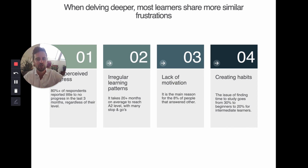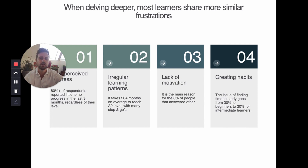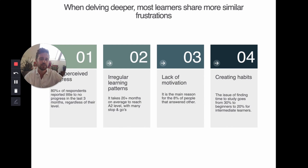Point three: lack of motivation, connected to the two previous points. Of the 8% of respondents who answered 'other' when asked about their biggest obstacle, lack of motivation was the single most mentioned issue. And finally, creating habits — we all know it's important, not only for language learning. Not surprisingly, creating habits was more of an issue for beginners than intermediate learners, though it was a struggle many had in common.